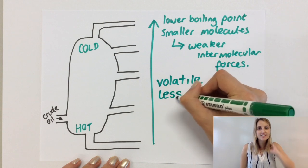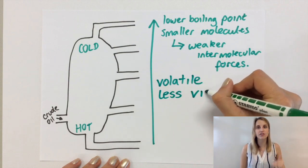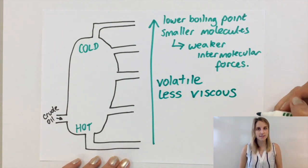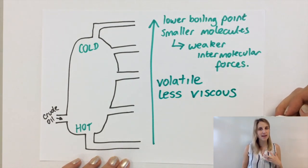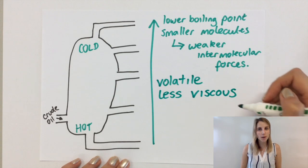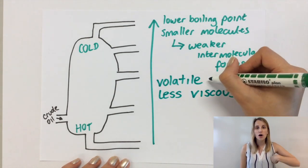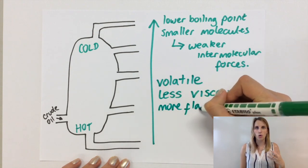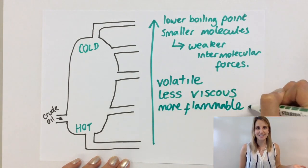Now the word viscous means that it doesn't flow very easily. So the ones at the bottom are far more viscous, that means that they're kind of gloopy like honey or ketchup. The ones at the top flow much more easily, like water or liquids that just flow very easily.